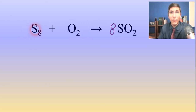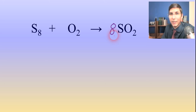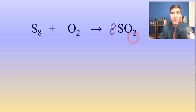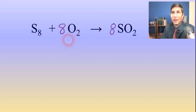Let's do the oxygens next. They were balanced before, but we kind of messed them up when we put that 8 out front. We have two oxygens on the left. How many oxygens are on the right side? It's eight times two, so 16. Remember, the coefficient multiplies everything that it's in front of. So we have 16 oxygens on the right. We're going to have to multiply the left one by 8 to make 8 times 2 equal 16 as well. So now we have that balanced equation.